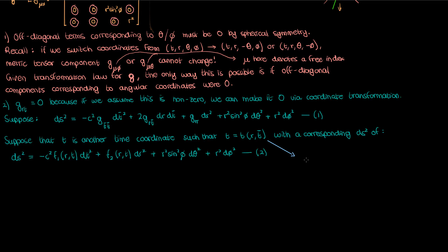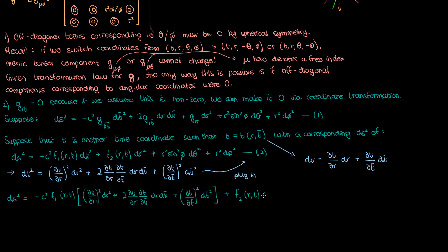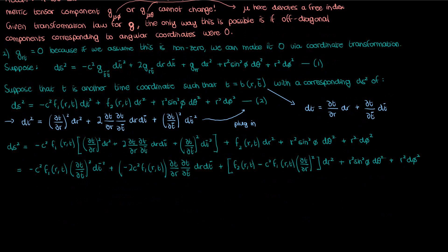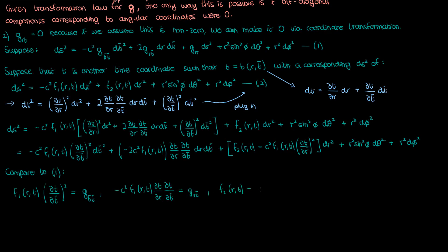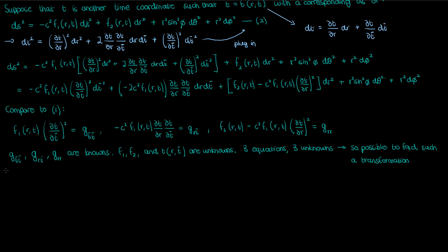The process is simple. We start with the differential dT, which in terms of dT-bar and dR is just a straight application of the partial derivative chain rule. That means dT squared is as follows, and plugging this into equation two and combining like terms gives us an expression to compare with equation one. Since the coefficients of dT-bar squared, dT-bar dR, and dR squared have to match, we form three coupled differential equations with three unknowns: F1, F2, and the transformation. This means it is indeed possible to transform away the off-diagonal metric tensor component G_RT.